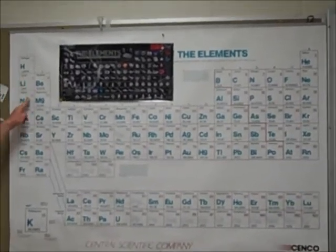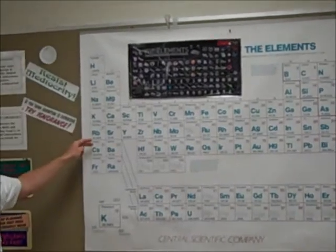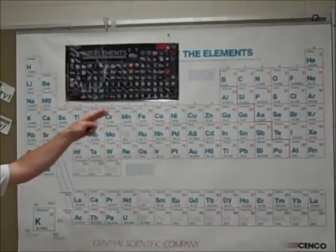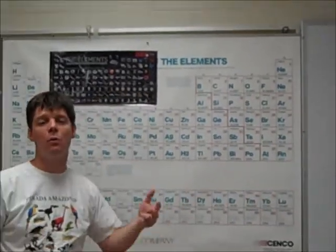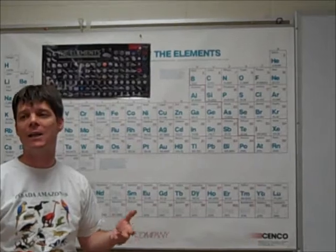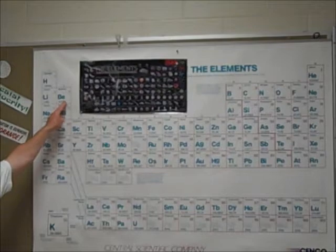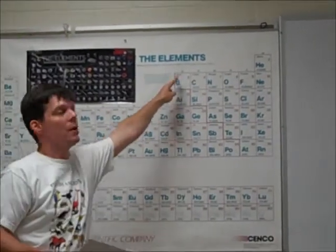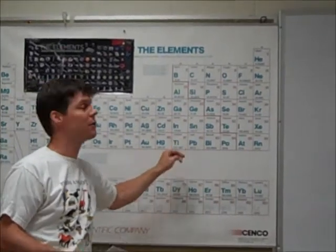Okay. So sodium belongs to this category of elements called the alkali metals. They all have plus-one charges when they form ions. Chlorine, over here, belongs to the halogens. And when they form ions, they all have a negative-one charge. Now, some other important ones that we need to know. This column, the alkaline earth metals, will have a plus-two charge as ions. The boron family will have a plus-three charge.